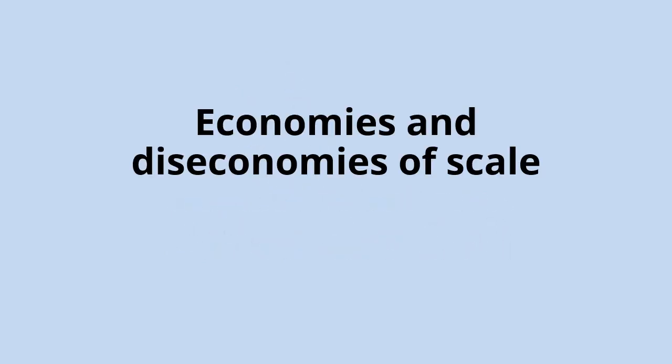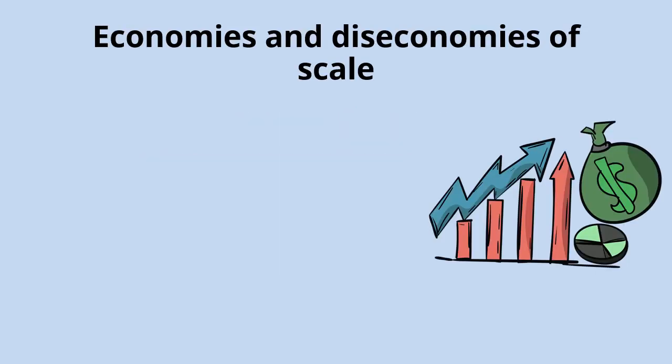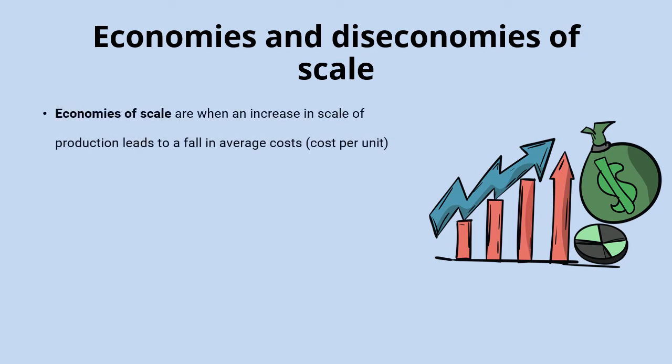This video is about economies and diseconomies of scale, which cover the benefits and problems associated with the growth of individual firms or entire industries. When scale of production increases, it is a really common phenomenon that average costs — the cost per unit of output produced — come down, and that is what we refer to as economies of scale.